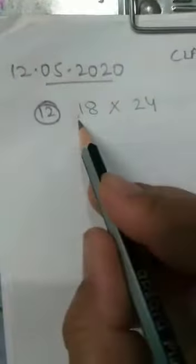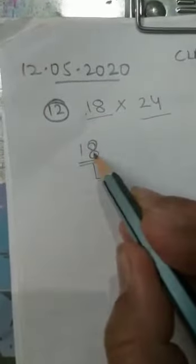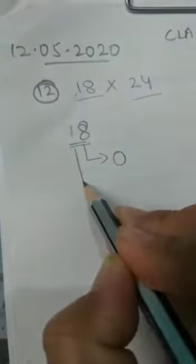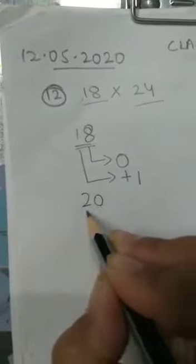Now come to the solution: 18 multiplied by 24. First we have to round off 18 and then 24, then calculate their product. Now round off 18 — 8 is more than 5, so we replace 8 by 0 and increase 1 in the tens digit. It becomes 20.